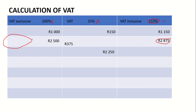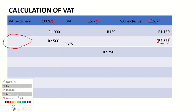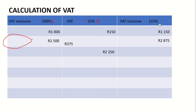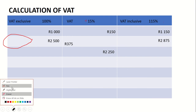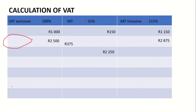Here I'm given the VAT amount, meaning whatever I want to calculate, I'm going to divide by 15 and multiply by whatever I want. If I want the price of the product exclusive of VAT, I'm simply going to take that R2250 divided by 15 and multiply by 100. If I want the price inclusive of VAT, I'm going to take that R2250 divided by 15 but multiply by 115.